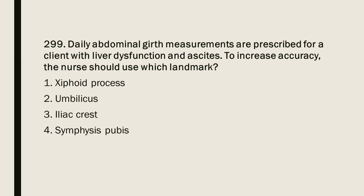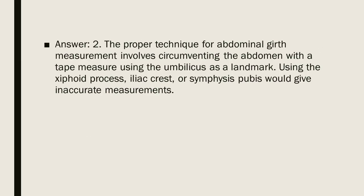Question 299: Daily abdominal girth measurements are prescribed for a client with liver dysfunction and ascites. To increase accuracy, the nurse should use which landmark? 1. Xiphoid process. 2. Umbilicus. 3. Iliac crest. 4. Symphysis pubis. Answer: 2. The proper technique for abdominal girth measurement involves circumventing the abdomen with a tape measure using the umbilicus as a landmark. Using the xiphoid process, iliac crest, or symphysis pubis would give inaccurate measurements.